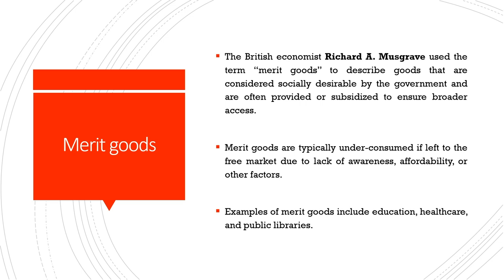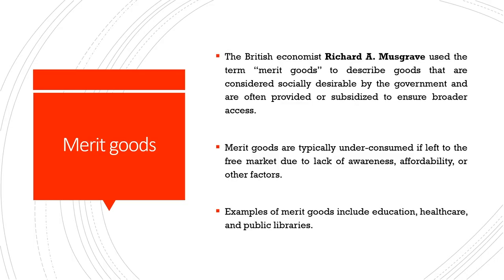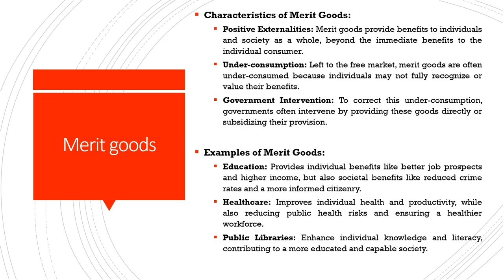Merit goods are considered socially desirable — meritorious goods with huge positive externalities for the economy and society as a whole. They are desirable by the government and are often provided or subsidized to ensure broader access. If not subsidized, merit goods are typically under-consumed when left to the free market: only people with ability and willingness to pay reveal their preferences, while those who cannot pay are excluded despite the social implications. Examples of merit goods include education, healthcare, and public libraries.